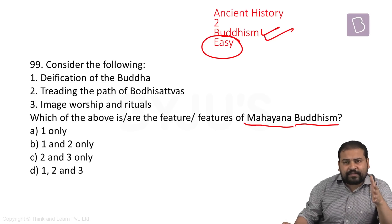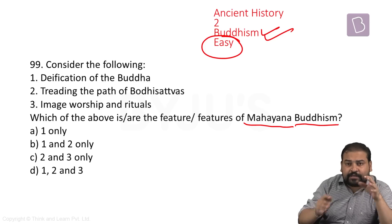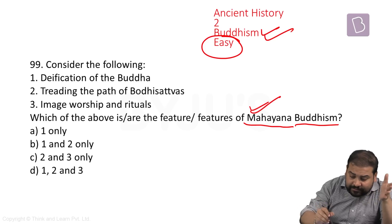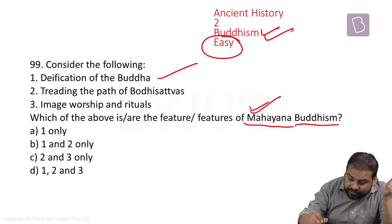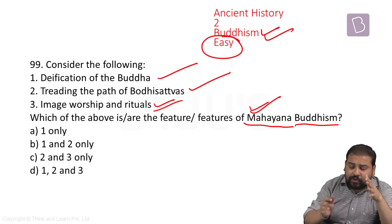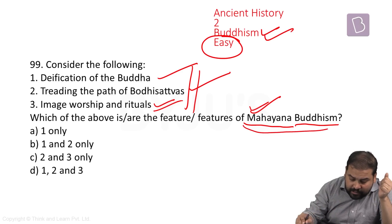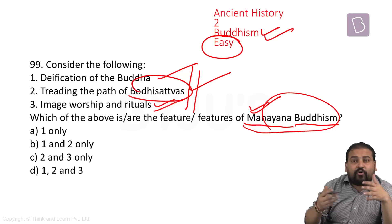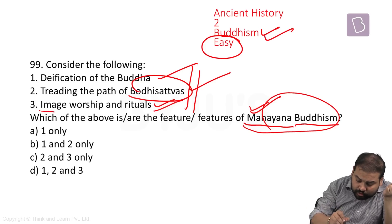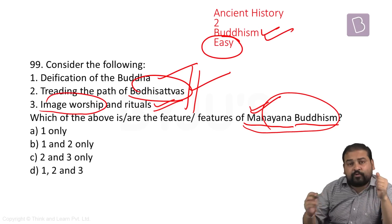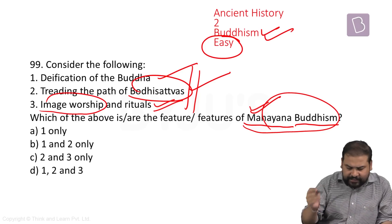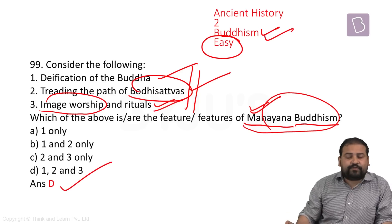Even if somebody had done their NCERTs properly, the differences between Mahayana and other sects of Buddhism are clearly mentioned. Looking at the three points — deification of Buddha, treading the path of Bodhisattvas, and image worship and rituals — all three clearly take part in Mahayana Buddhism. We know Bodhisattva is a person who has already been enlightened, they worship Buddha's image, and there is deification of Buddha. The answer is D — all three points were correct.